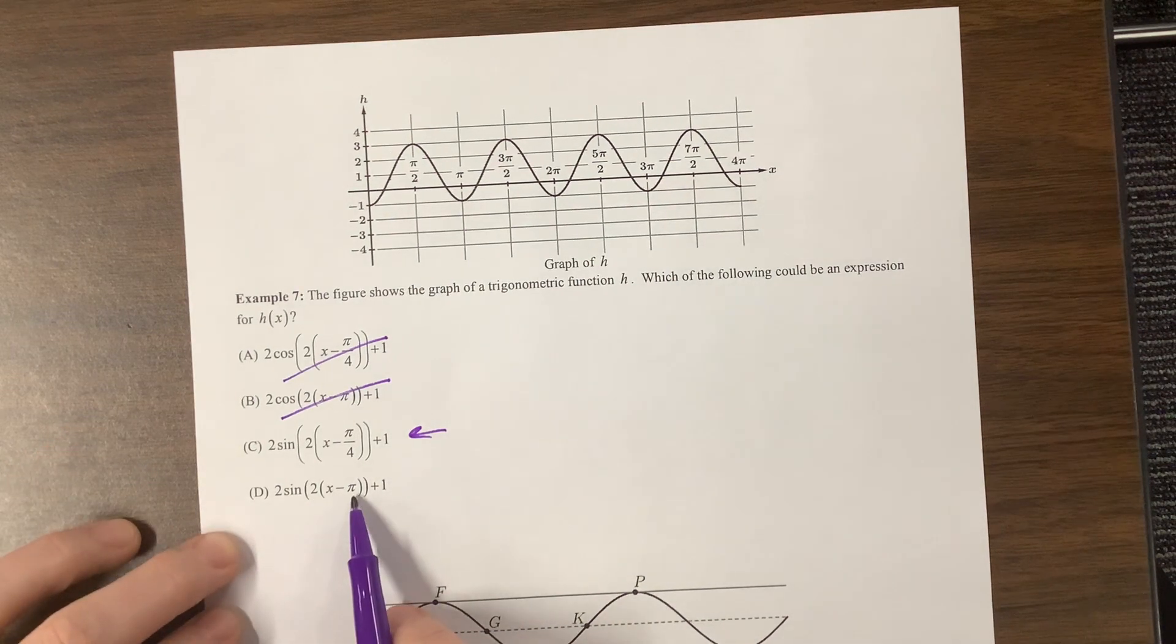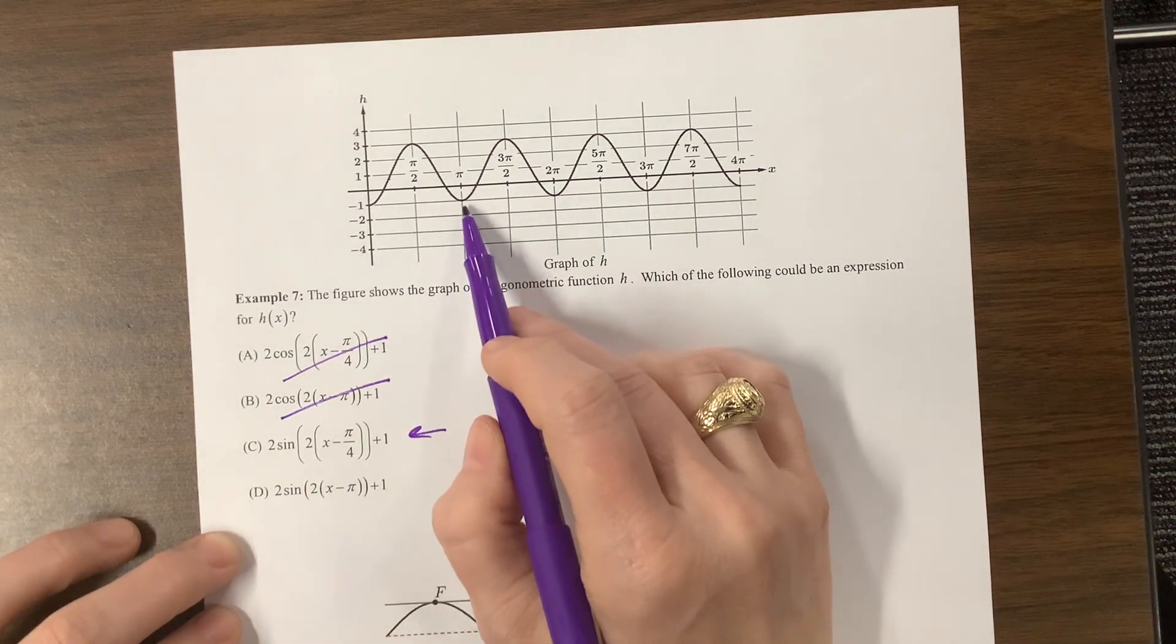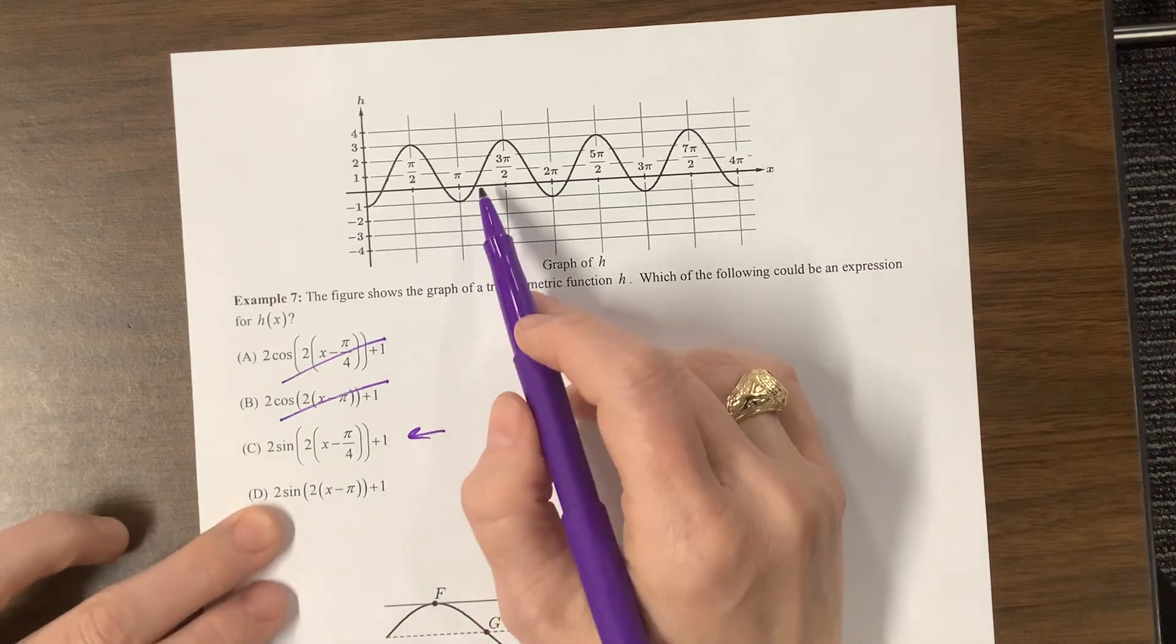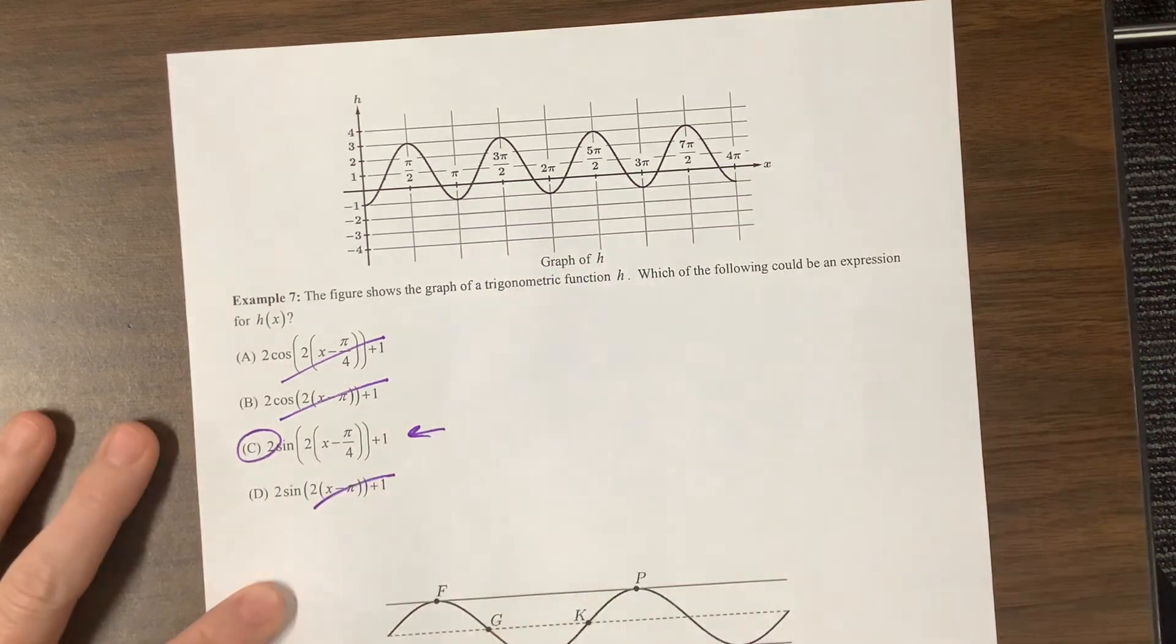Let's check the last one. This is saying we shifted over to the right pi, and well, we're at the very bottom, but sine requires us to be at the midline. So that's no good. Our answer was C.